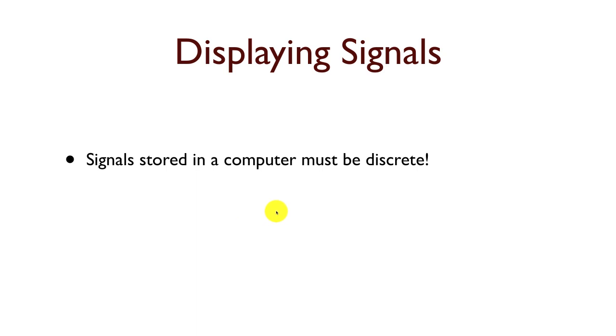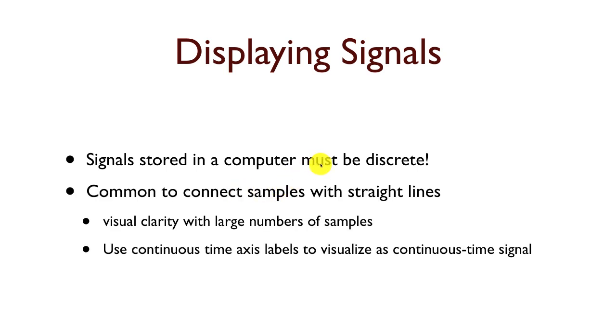Now before we look at those signals, I want to say a little bit about how we display signals. First of all, once we have signals in a computer, they've got to be discrete value because a computer can only store values of the signal at specific instances in time. When we visualize this, if we only have 100 points or so, it's fine to use a stem plot. But if we have signals that have a lot more points, then it's very common to connect the samples with straight lines. So we're visualizing it as if it were a continuous valued independent variable. This gives us visual clarity when you have a large number of samples because stems just get too compacted and difficult to distinguish. And we'll also often use axis labels for the continuous independent variable in order to visualize the signal. And we're going to do that in these next examples.